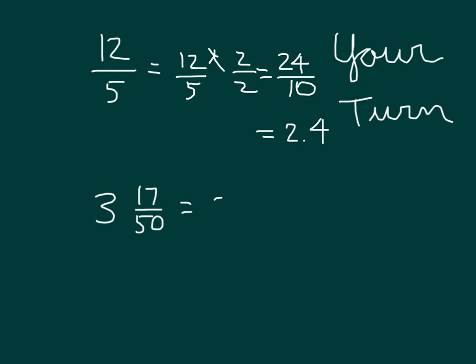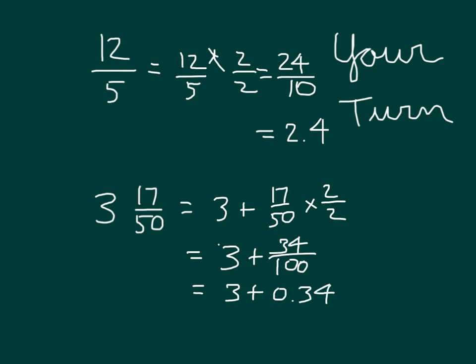Three and seventeen-fiftieths can break it apart to get three plus seventeen over fifty. And then we'll take one more step there. We'll multiply by two over two to be able to get to hundredths. So we have three plus thirty-four hundredths, which is equal to three plus zero point three four, which is equal to three point three four. Also read as three and thirty-four hundredths.